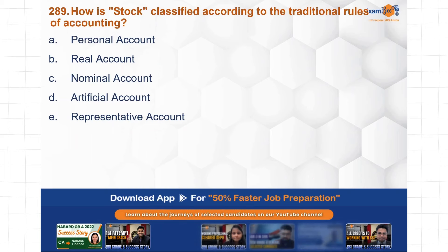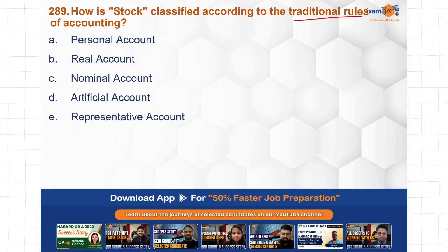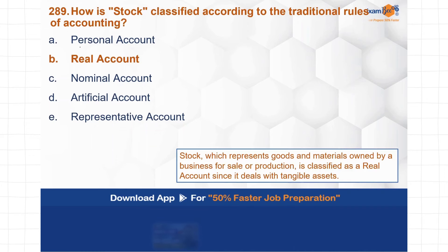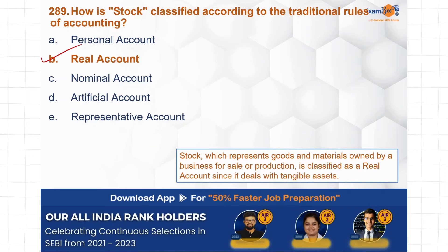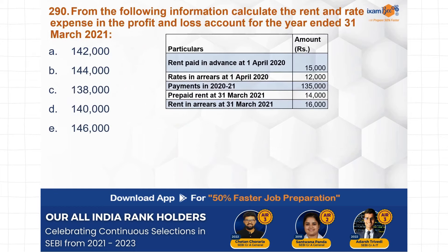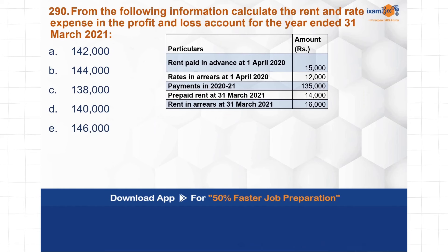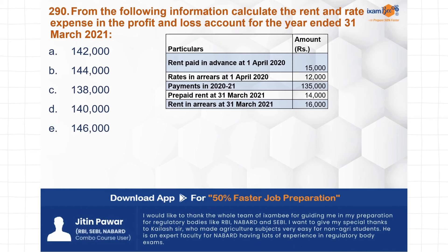Next question: how is stock classified according to the traditional rules of accounting? Stock should be classified as an asset — it falls under the Real Account. Under traditional rules, there are three types of classification: Personal, Real, and Nominal. Stock falls under the Real Account.